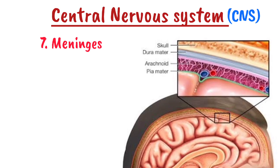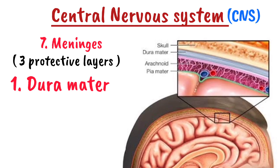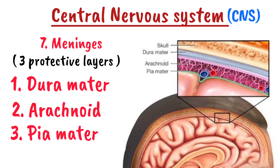Number seven is the meninges, the protective layers of the CNS. There are three layers: number one is the dura mater, which is the outermost and toughest layer; then the arachnoid layer, which is the middle layer containing cerebrospinal fluid (CSF); and the pia mater, which is the innermost layer that closely adheres to the brain and spinal cord.